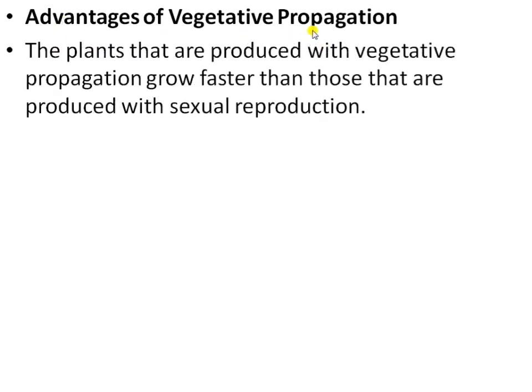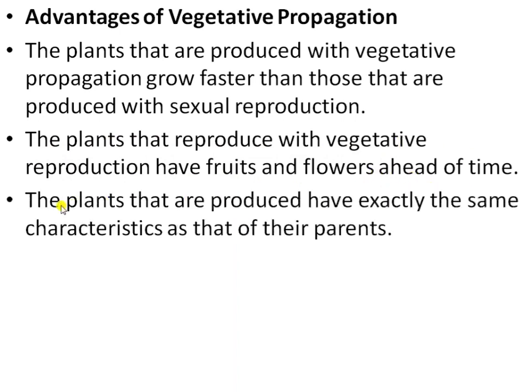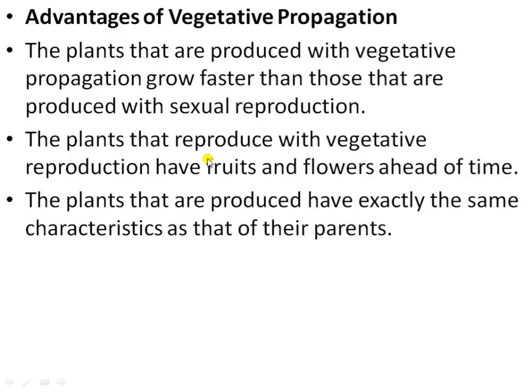Next are the advantages of vegetative propagation. First, plants produced with vegetative propagation grow faster than those produced with sexual reproduction. Second, plants that reproduce with vegetative reproduction have fruit and flowers ahead of time. Third, the plants produced have exactly the same characteristics as their parents, and it is an easier, less expensive, and rapid way of producing new plants. In vegetative propagation, a plant takes less time to grow. Also, plants that cannot produce proper seeds, like banana and pineapple, can be easily grown through vegetative propagation.